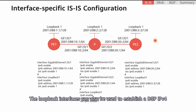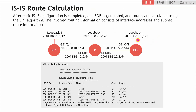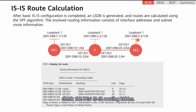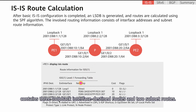The loopback interfaces can also be used to establish a BGP IPv4 unicast peer relationship later. After completing basic IS-IS configuration, check the PE's IS-IS routing tables. Taking PE1 as an example, we can see that the IS-IS routing table contains three loopback interface destination routes and two subnet routes.